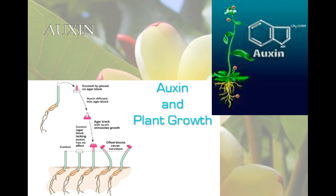Auxin works at certain levels, but if there is too much, it causes cells to produce ethylene, which reverses auxin's effects. Low concentration of auxin causes root cells to elongate. Higher levels cause stem cells to elongate, and root cells are inhibited. Auxin also induces cell division in vascular cambium, which increases the stem diameter, and it promotes the growth of fruit.